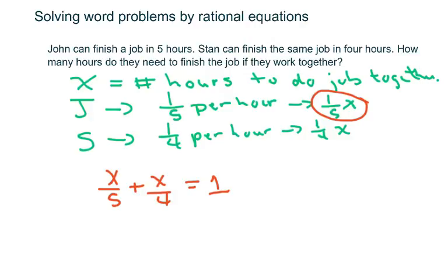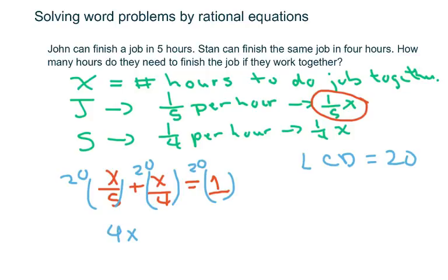And we're gonna add it up. So we're gonna multiply it by our LCD. Our LCD is 20. So you multiply each piece by 20. And we're gonna get four X plus five X equals 20.